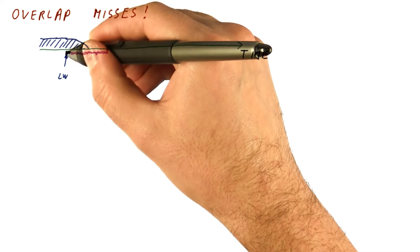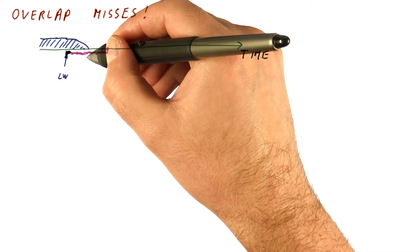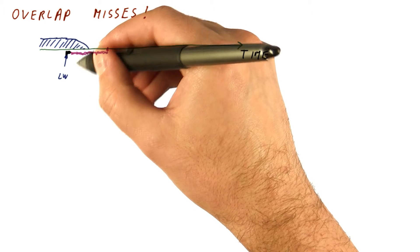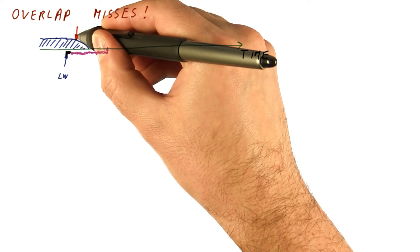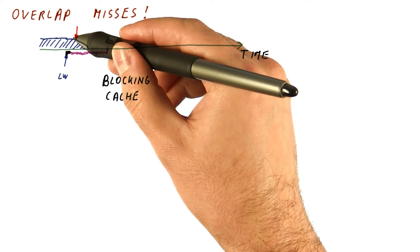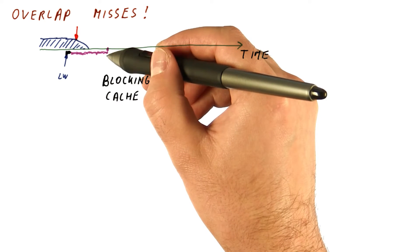During the time between trying to execute this load and running out of things to do, this processor might actually issue another load that would be a cache miss. So if we have what is called a blocking cache, then this load cannot be done until the first load is finished.